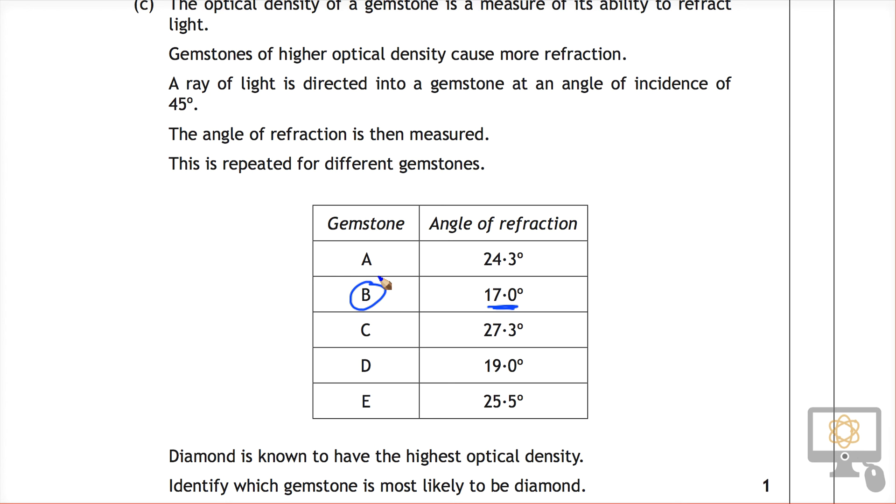It bends toward the normal the most. It can be a little bit confusing because the angle is the smallest and it bends the most, but you have to bear in mind that the angle is measured from the normal line.